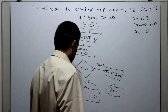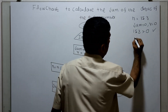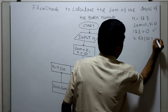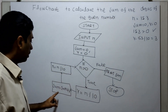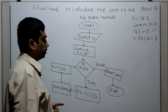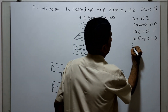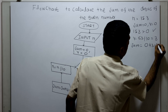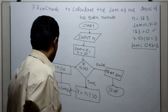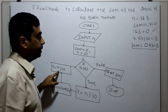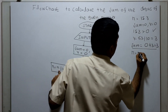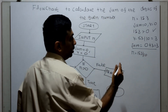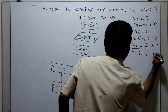153 greater than 0 is true. Then r equal to n mod 10 — r equal to 153 mod 10, the remainder is 3. Sum equal to sum plus r: existing value of sum is 0, so 0 plus 3 equals 3. Value of sum is now 3. Then n equal to 153 divided by 10 — integer division gives 15.3, fraction part is removed, so n equal to 15.